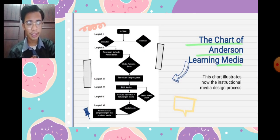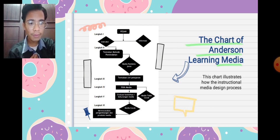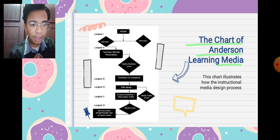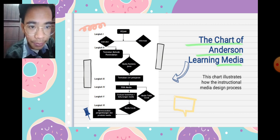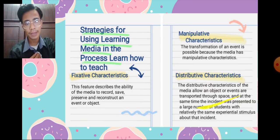This chart is an illustration of the instructional media design process. The first step is knowing the information and instruction of our media. The second step is knowing the method of our learning. The third is knowing the characteristics of the learning. The fourth is choosing our media. The fifth is evaluating our media. And the last is doing the planning and development of our media.